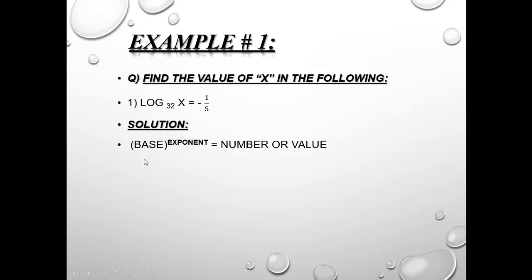The base is 32, the value on the right is x, and the power is minus 1 over 5. We substitute these into the exponential form structure. Now for power cancellation, we need the exponential form of 32. Taking the LCM of 32, we get 5 factors of 2, so 32 equals 2 raised to the power of 5. This gives us the exponential form.